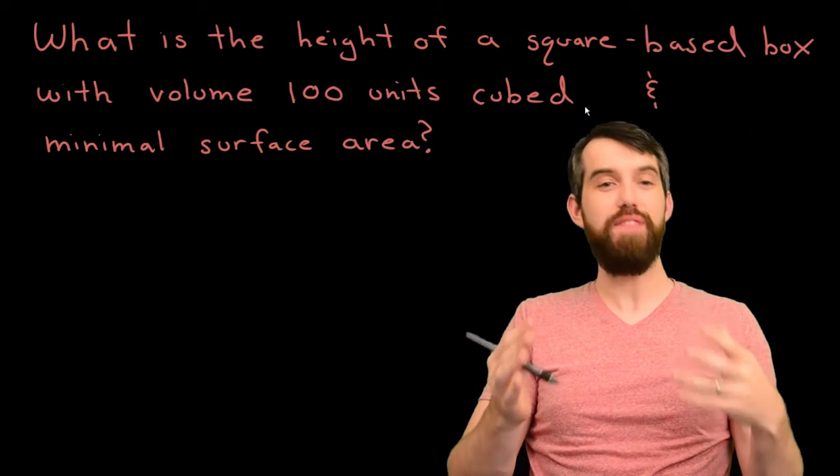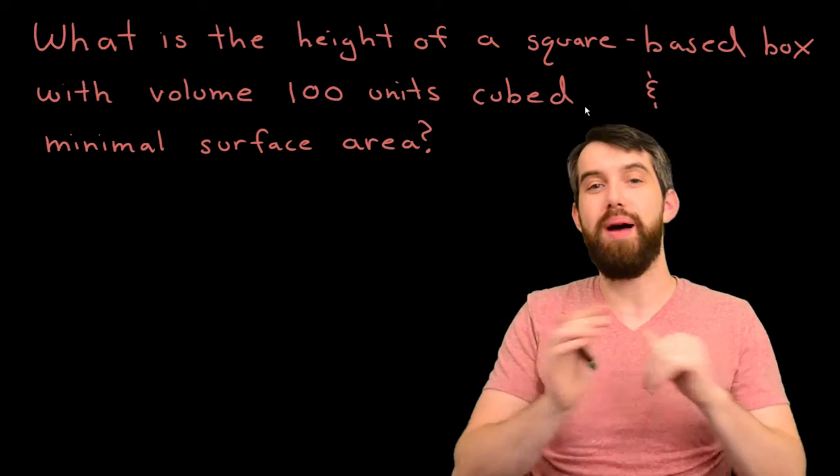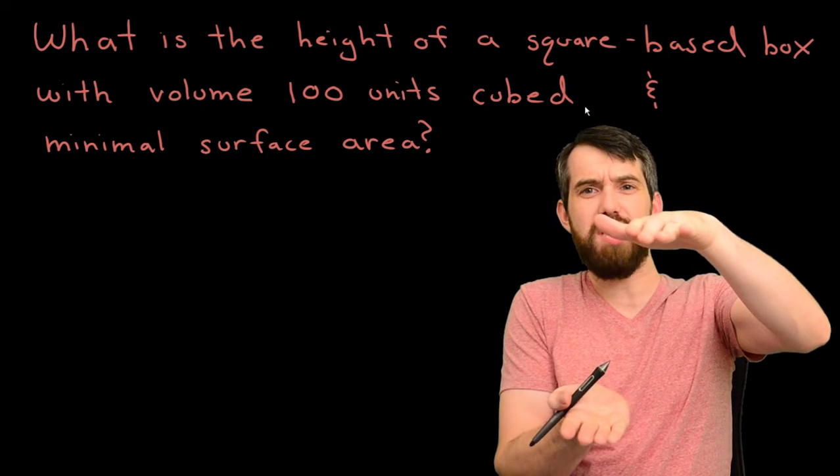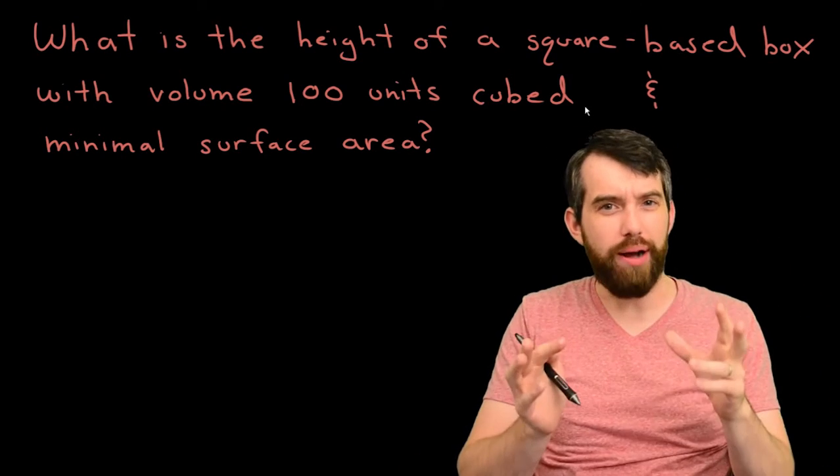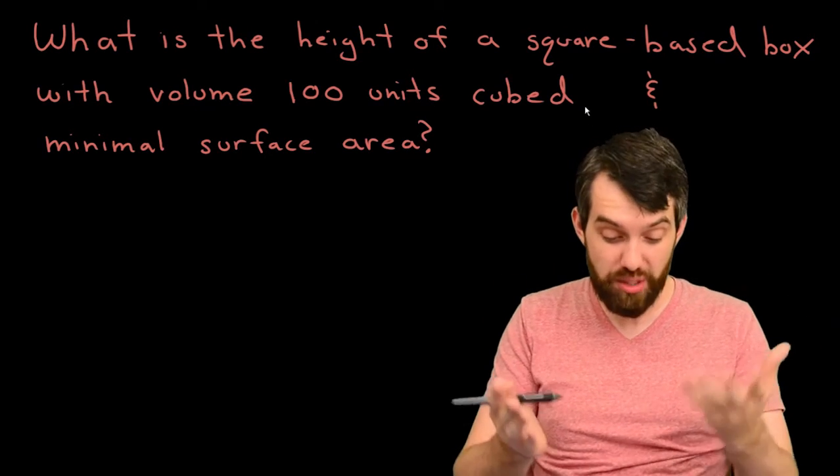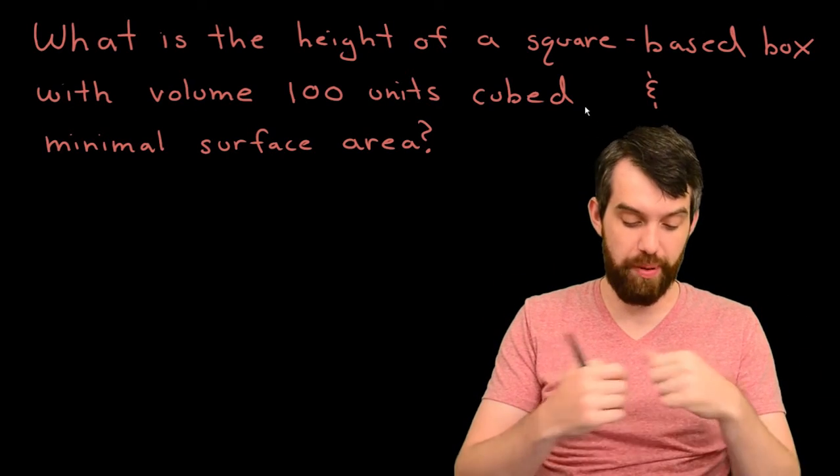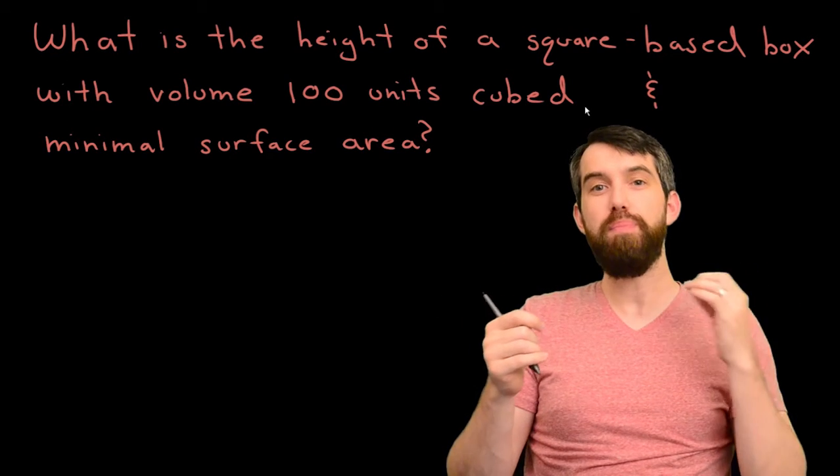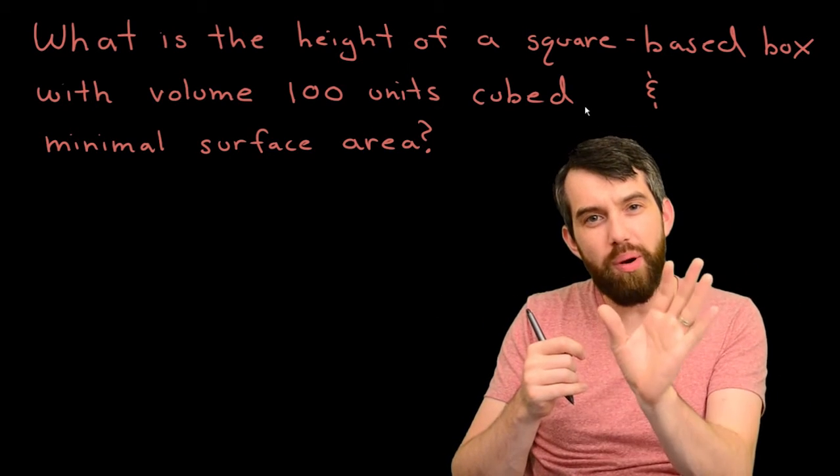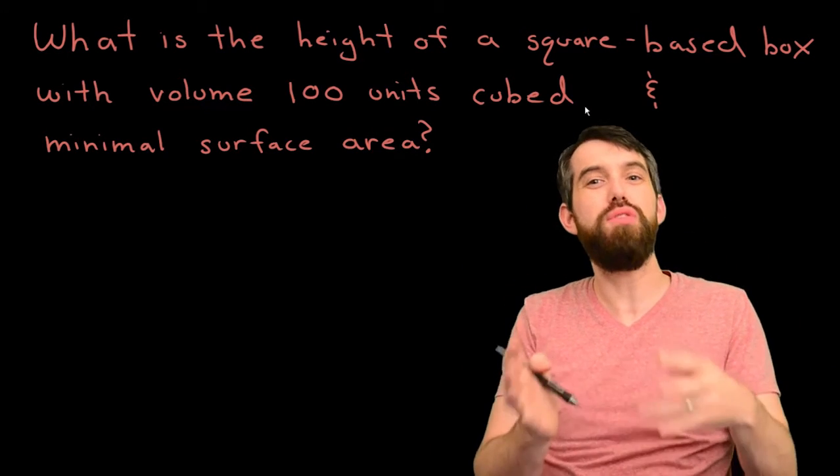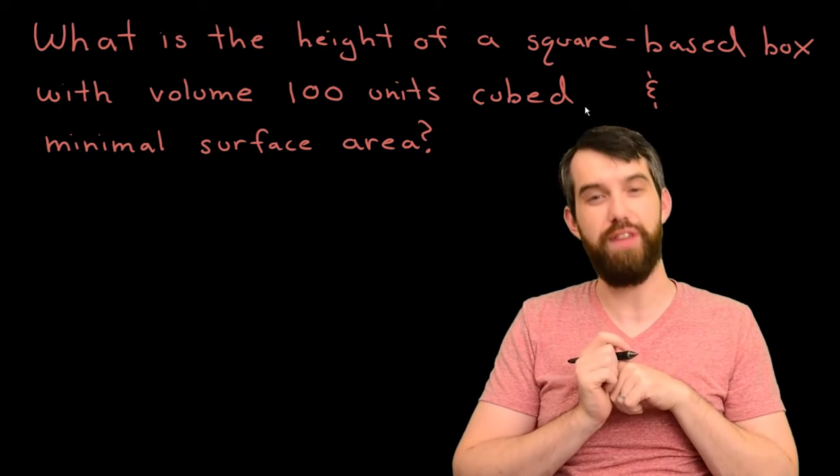In this video, I'm going to be investigating a particular optimization problem. I'm looking at what is the height of some square-based box where the volume has a constraint on it. The volume is 100 units cubed. But our goal is not just any box, but the box that has minimal surface area. So it's the surface area I'm trying to minimize, subject to the constraint that the volume here is fixed.